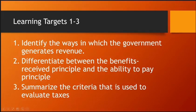We're going to tackle the first three learning targets all in one: identify the ways in which government generates revenue, differentiate between the benefits received principle and the ability to pay principle, and summarize the criteria used to evaluate taxes. There are seven learning targets total, but we're knocking out three in one, so it's not that hard.